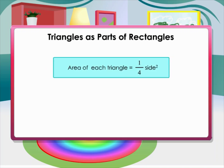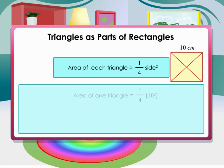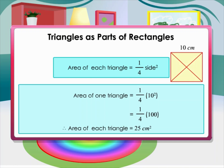For example, if we have a square of side 10 centimeters, the area of one triangle equals one-fourth times 10 squared, which equals one-fourth times 100. Therefore, the area of each triangle equals 25 centimeters squared.